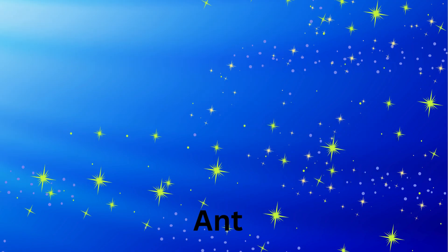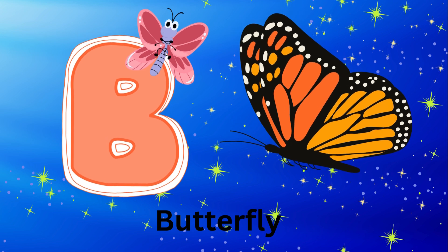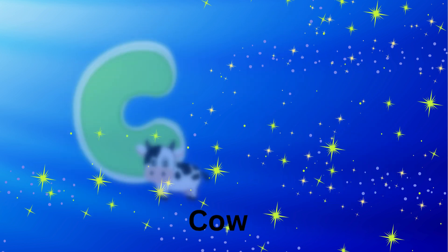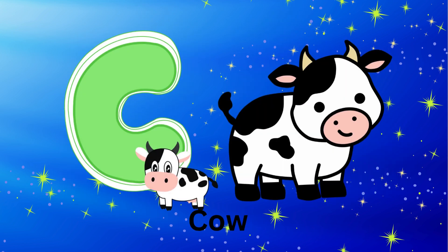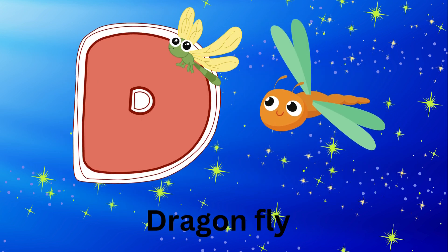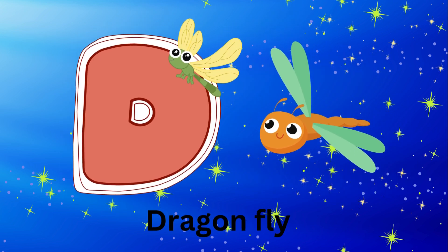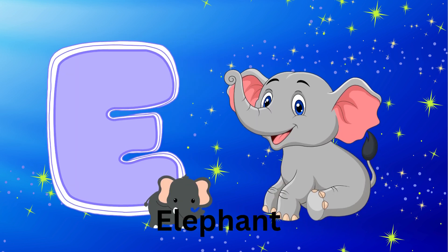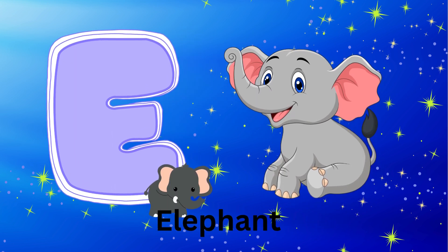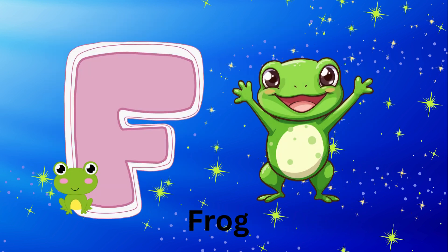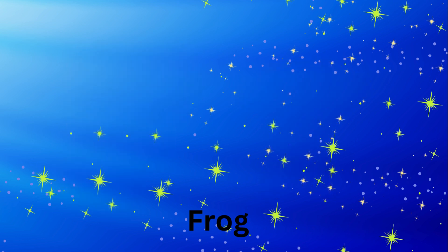B is for butterfly, C is for cow, D is for dragonfly, E is for elephant, F is for frog,